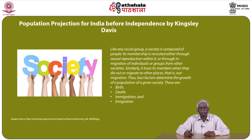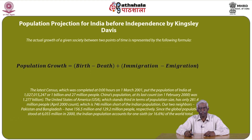Like any social group, a society is composed of people whose membership is recruited either through sexual reproduction within it or through in-migration of individuals or groups from other societies. Similarly, it loses its members when they die out or migrate to other places — that is, out-migration. Thus, four factors determine the growth of a given society's population: births, deaths, immigration, and emigration. The actual growth of a given society between two points of time is represented by the formula: population growth = births − deaths + immigration − emigration.